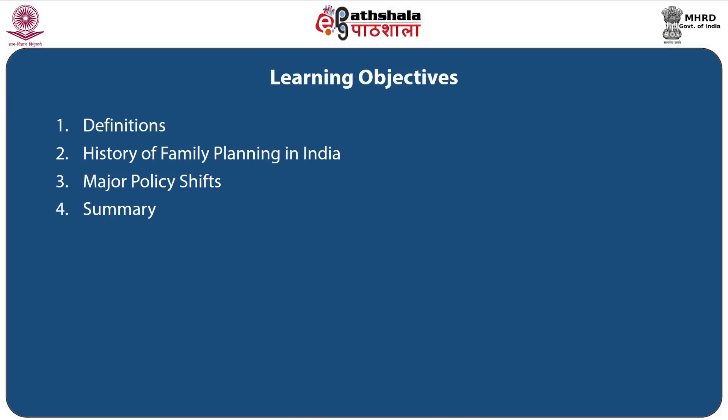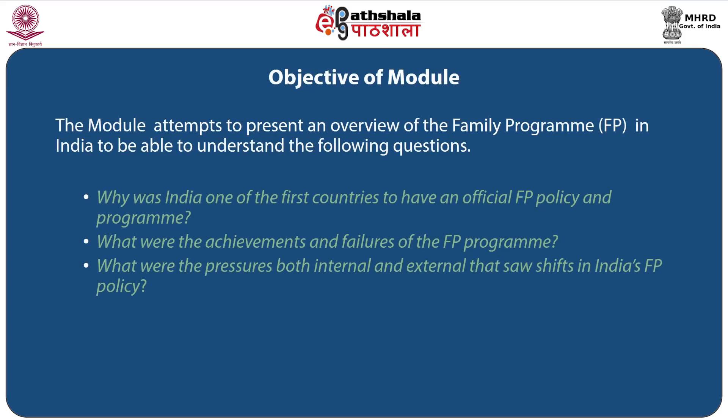The module outline is as follows. We will visit some of the definitions of family planning, know about the history of family planning in India, look into the major policy shifts, and ultimately summarize the module. The objective is to present an overview of the family planning program in India, including why India was one of the first countries to have an official family planning policy, what were the achievements and failures, and what pressures caused shifts in India's family planning policy.